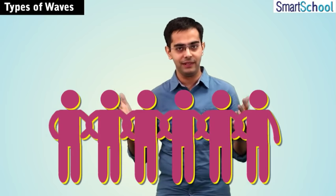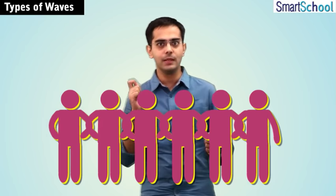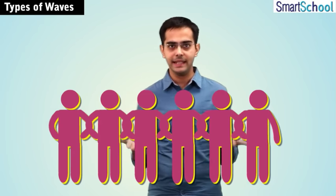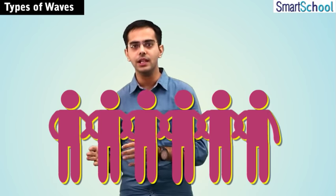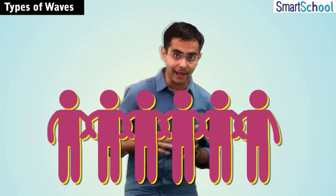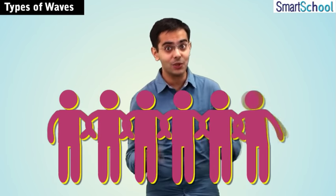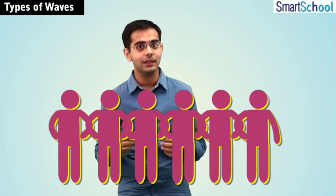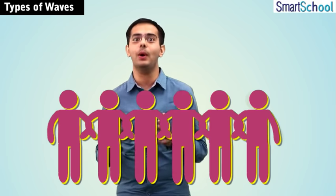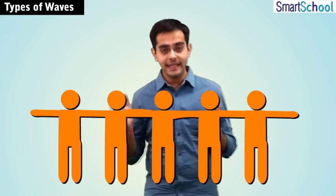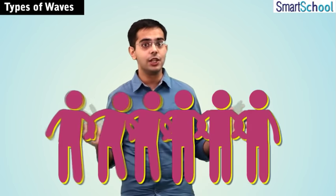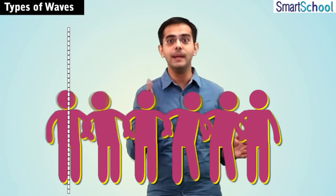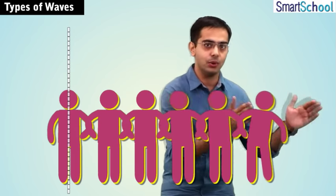Now we take the same group of people but with a slightly different arrangement. This time they are not holding each other through their shoulders but through their elbows. The first person gently pushes the second person sideways and then pulls him back. This push-and-pull motion is propagated towards the last person of the group. Unlike the previous case where each person moved up and down, in this case each person is moving back and forth about their mean position.